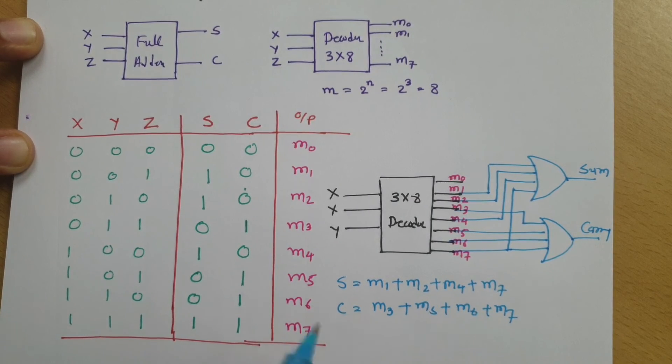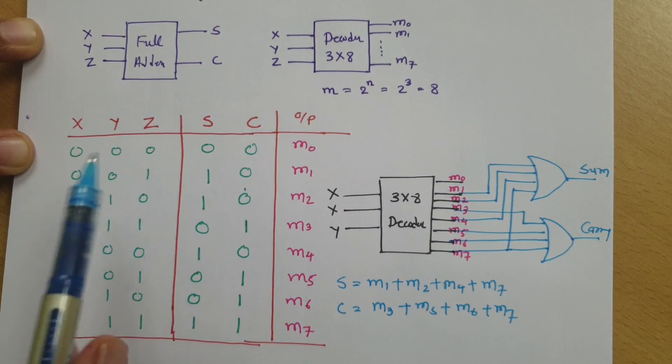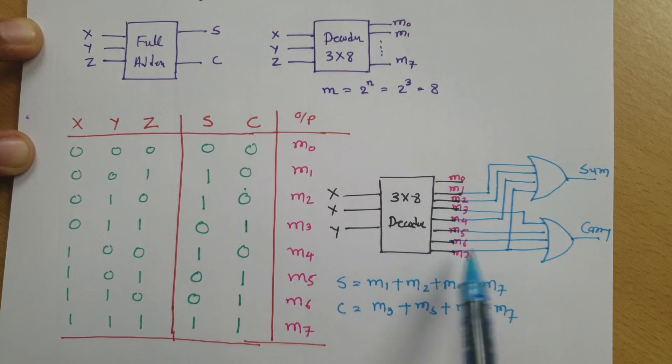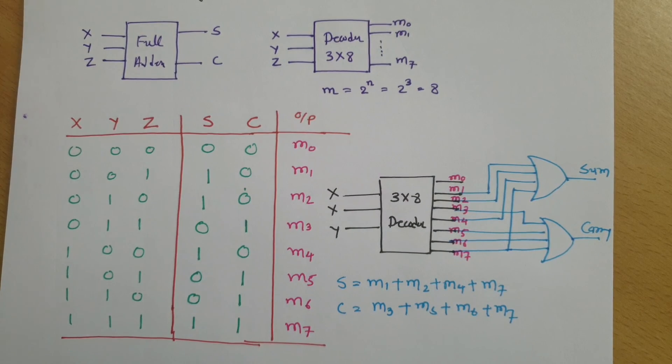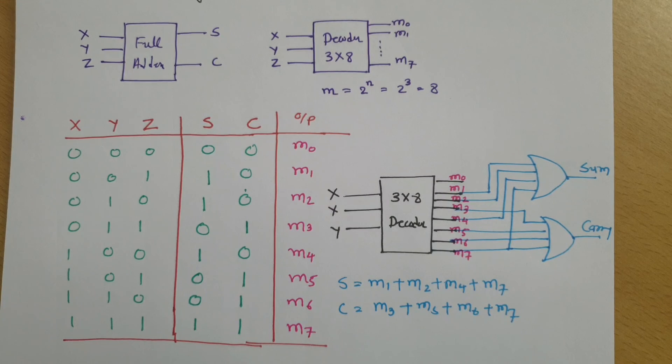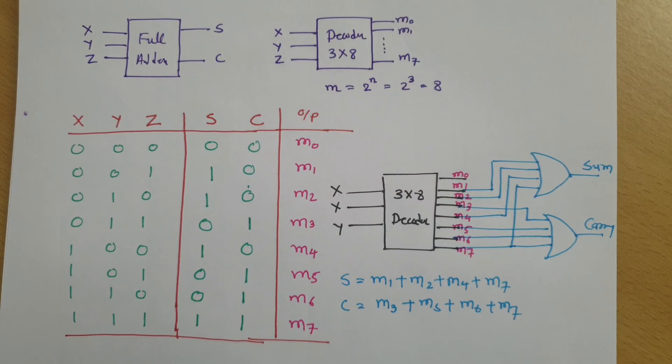So now you can see we have implemented full adder by using 3 by 8 decoder. Whenever this type of questions are coming, you should be ready with this type of logic where you have to merge logic of full adder as well as decoder. And then combinational circuit can result into your function. I hope that you have understood this.